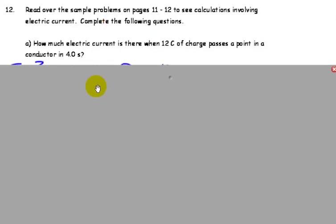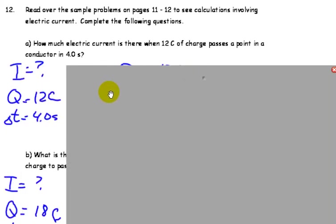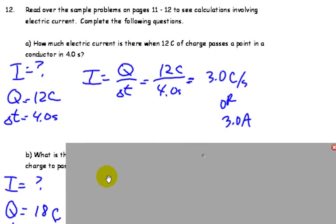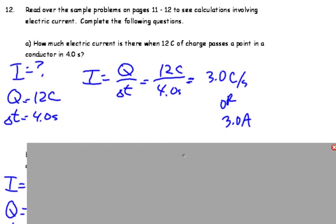So, a few questions here. How much electric current is there when 12 coulombs of charge passes a point in a conductor in 4 seconds? So, how much current is I? The charge is 12 coulombs, and it's 4 seconds. So, I equals Q over T. So, we get 12 coulombs divided by 4 seconds. So, that's 3.0 coulombs per second or 3.0 amps.